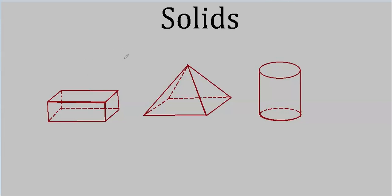The simplest solids to compute surface areas and volumes are the polyhedra. Polyhedra is a three-dimensional figure made up of polygons. If you stick enough polygons together, you'll end up with something like this, which is called a rectangular prism. Anything with two parallel polygonal faces is a prism, so we could call this a rectangular prism.